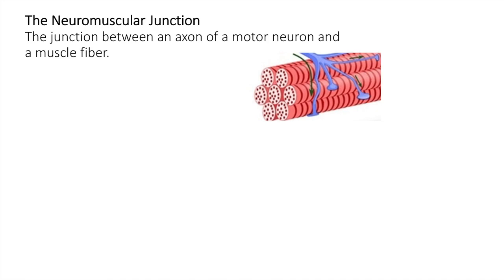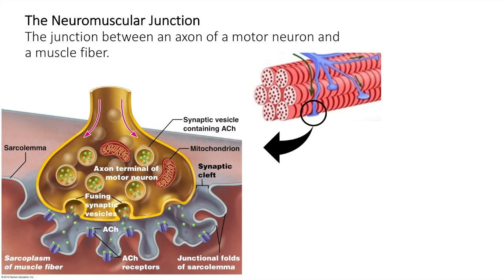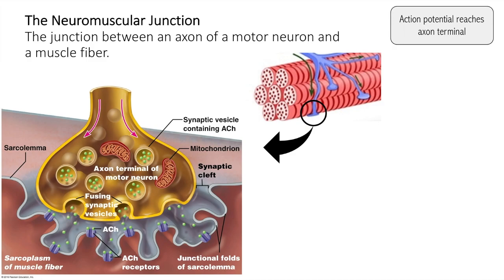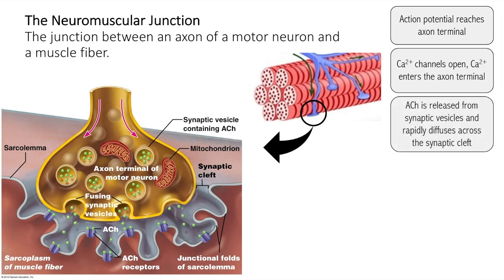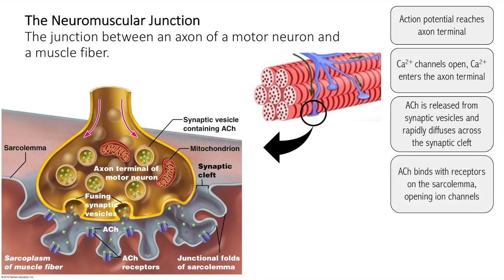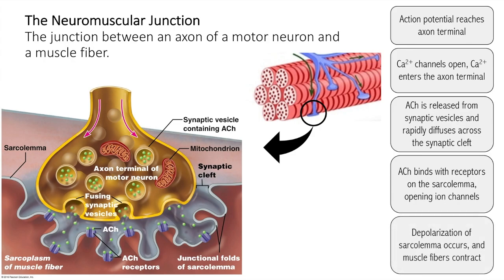The junction between an axon of a motor neuron and a muscle fiber is called a neuromuscular junction. The neuron and muscle fiber membranes don't actually touch — they're separated by a small, fluid-filled gap called the synaptic cleft. Within the axon terminals are many mitochondria and vesicles containing a neurotransmitter called acetylcholine, or ACh. When an action potential reaches the axon terminal, voltage-gated calcium channels open. Calcium enters the axon terminal and causes acetylcholine to be released by exocytosis. The acetylcholine rapidly diffuses across the synaptic cleft and combines with receptors on the sarcolemma. When the receptors bind acetylcholine, a change in the permeability of the sarcolemma occurs, ion channels open briefly, depolarizing the sarcolemma and causing the muscle fibers to contract.